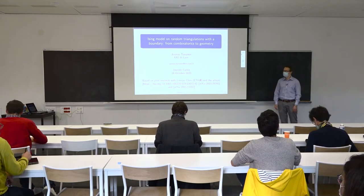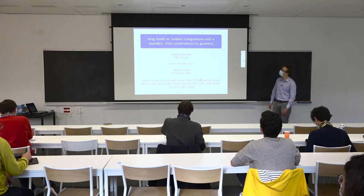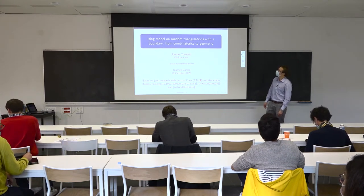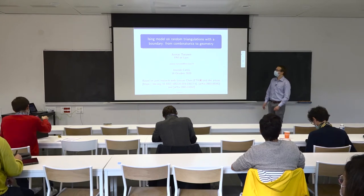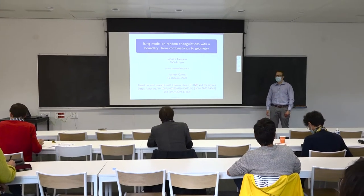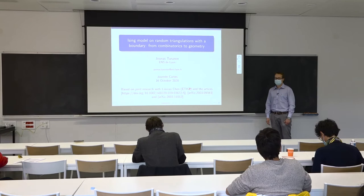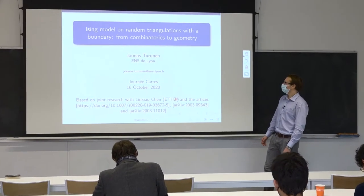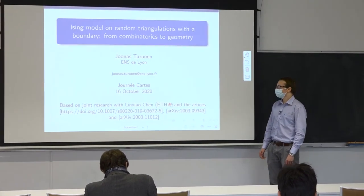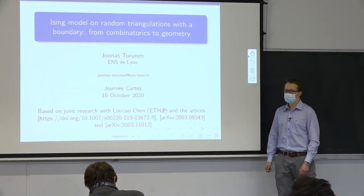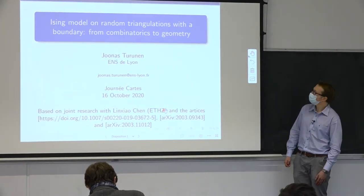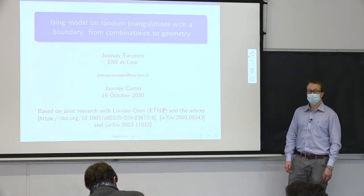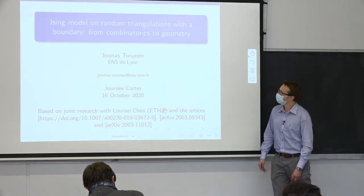Thanks to the organizers for the invitation. I'm going to talk about Ising model random triangulations with a boundary, starting from the combinatorics and progressing towards the geometry. This is mostly based on joint work with Lingxiao Chen, who is now at ETH Zürich, and there are three articles containing the contents of this talk.